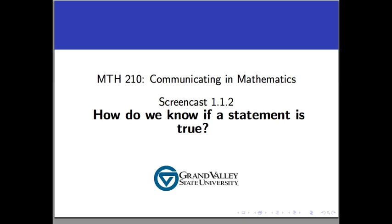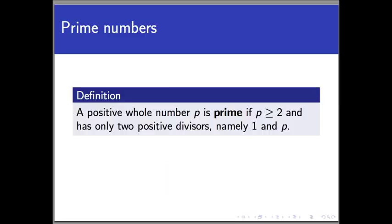Well, let's look at a case study here, and we're going to define an important kind of number first. We're going to say that a positive whole number P is a prime number if P is bigger than or equal to 2, and if it only has two divisors, namely 1 and itself.